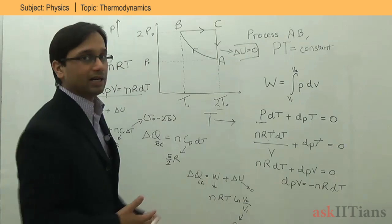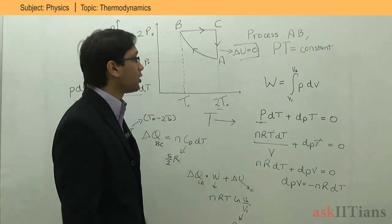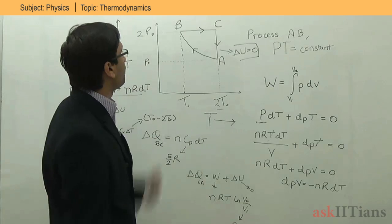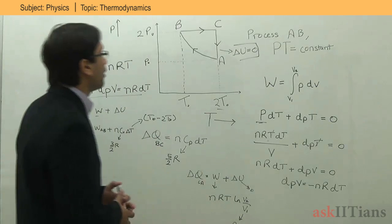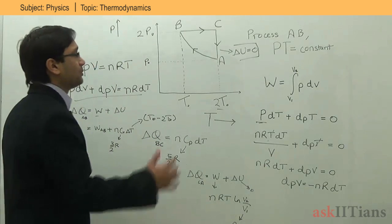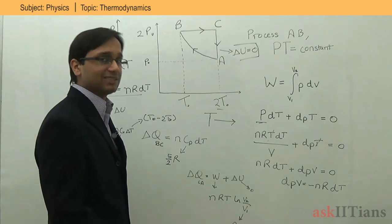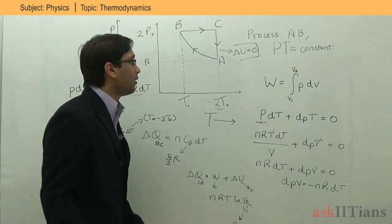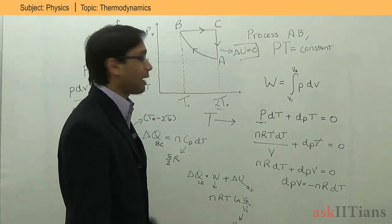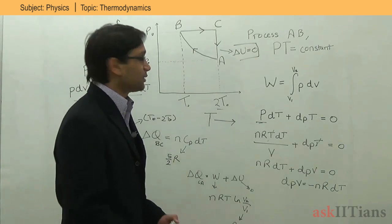This is basically a typical question from the first law of thermodynamics where you are given a diagram — PV, PT, or TB — and you have to find the work done and heat exchange. This is the general procedure to solve any of these types of questions. Thank you.